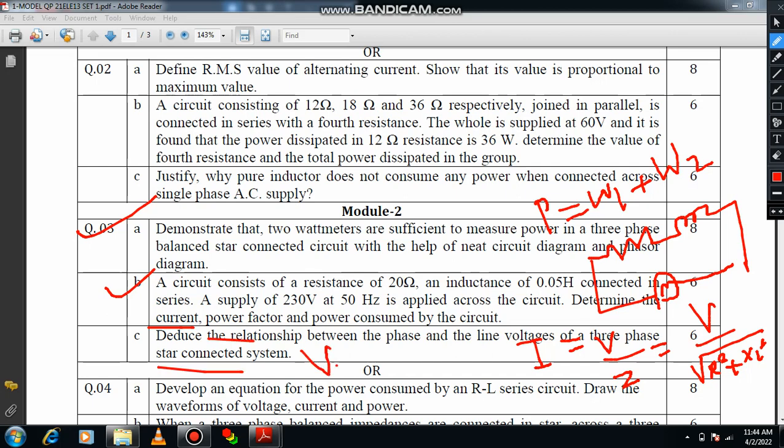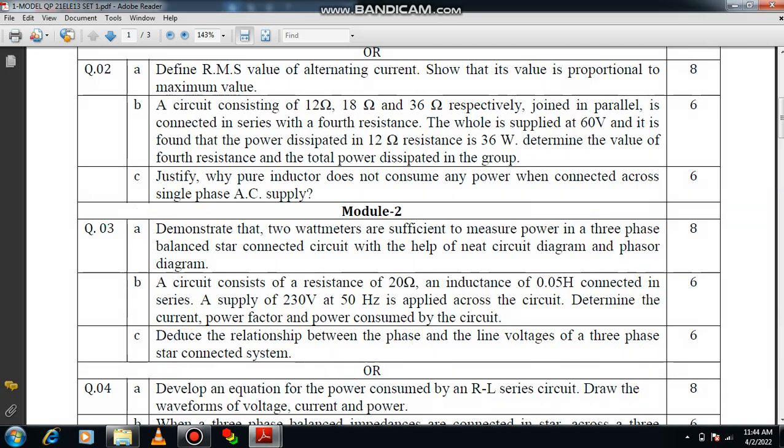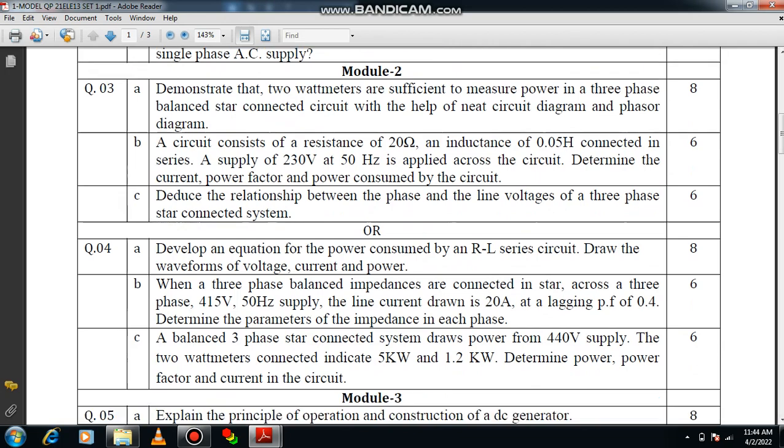Then deduce the relationship between phase and line voltages of a three phase star connected system. You have to prove that line voltage equals root 3 times phase voltage. That is the target. Using the phasor diagram you can make this out. First draw the phasor diagram, then use the parallelogram of vector addition. You will get 6 marks.